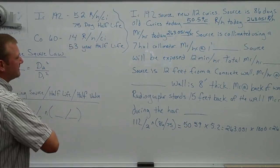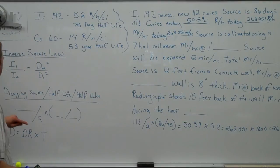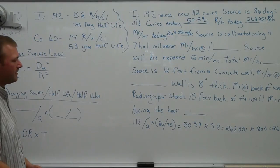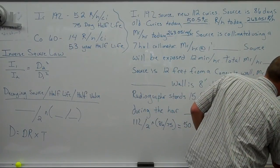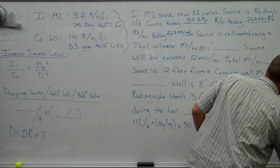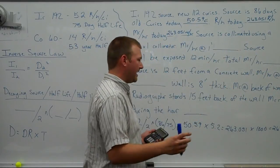The source is collimated using a 7 half value layer collimator. Half value, so all we do is divide this guy by the power, or divide that by 2 to the power of 7, because we have 7 half value layers.